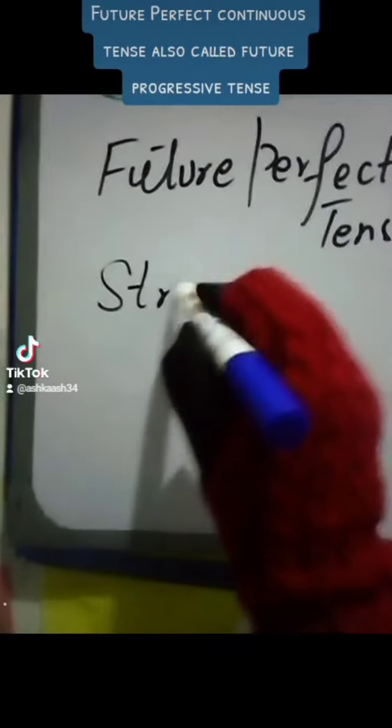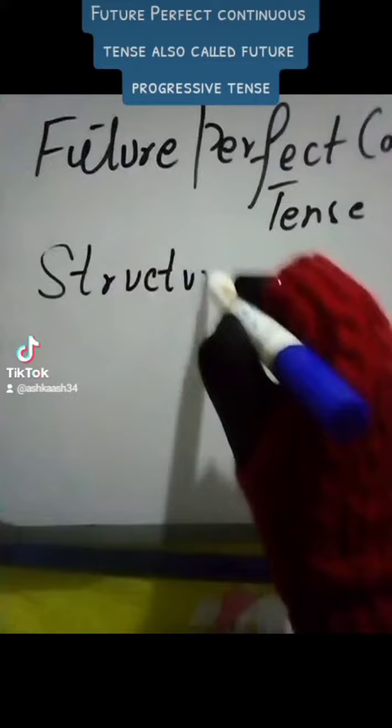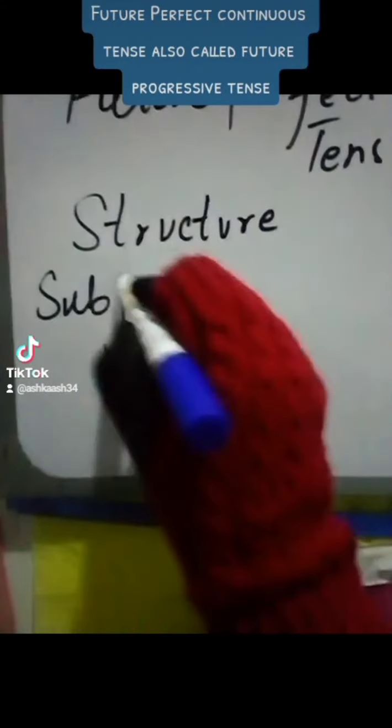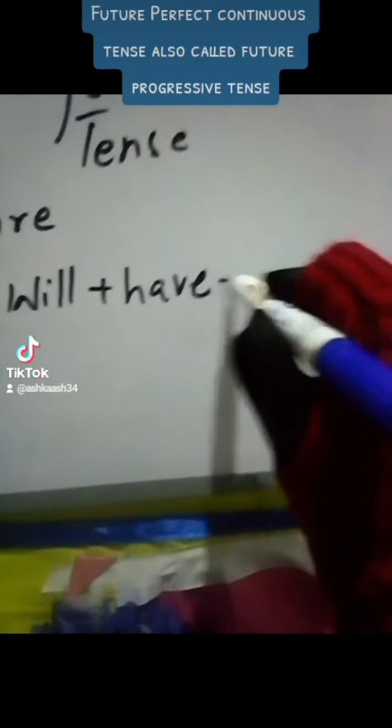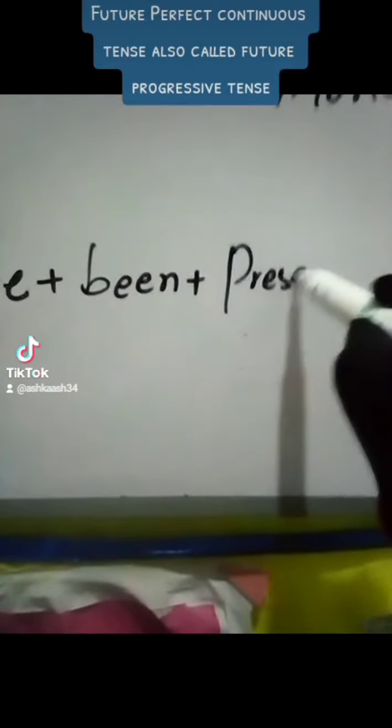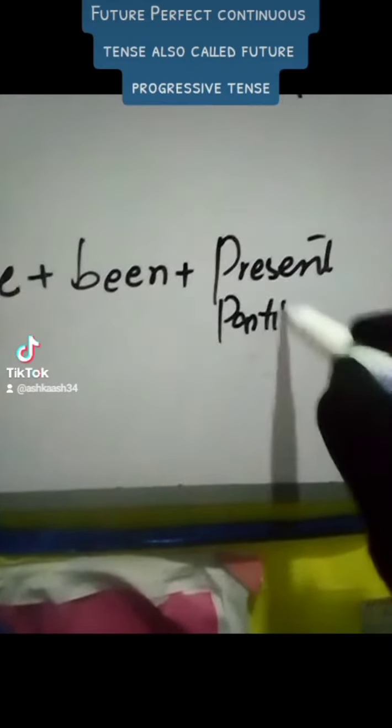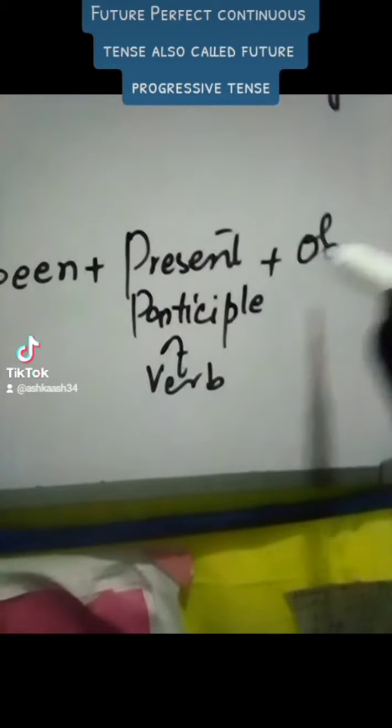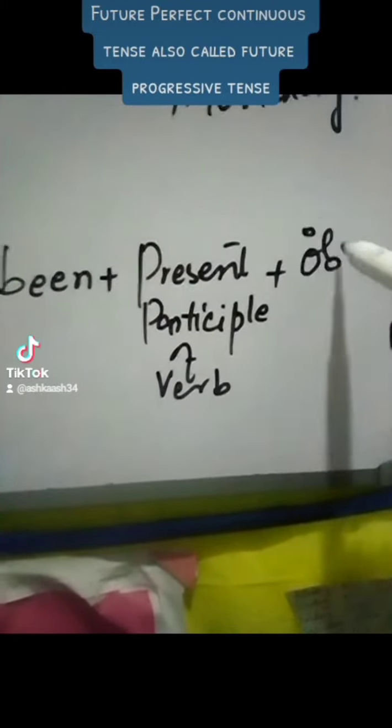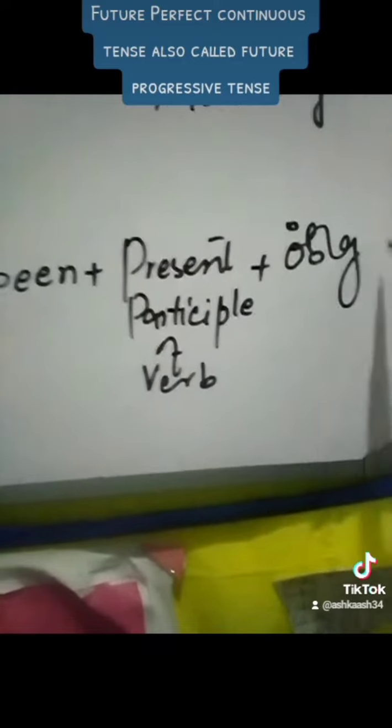Bismillahirrahmanirrahim, okay let's have a look. Future perfect continuous tense is a tense which shows a progression, means an action which will continue in future for a specific time period. I will have been teaching English for next five months.